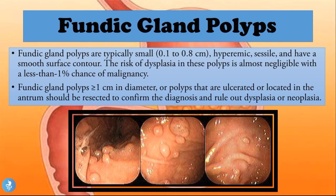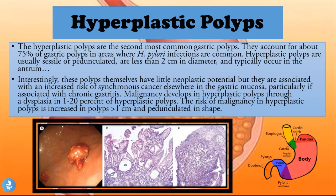Fundic gland polyps are typically small — 0.1 to 0.8 centimeters — and are hyperemic, sessile, with a smooth surface contour. The risk of dysplasia is almost negligible, with less than a one percent chance of malignancy. Polyps more than a centimeter in diameter, or those that are ulcerated or located in the antrum, should be resected to confirm the diagnosis and rule out dysplasia or neoplasia.